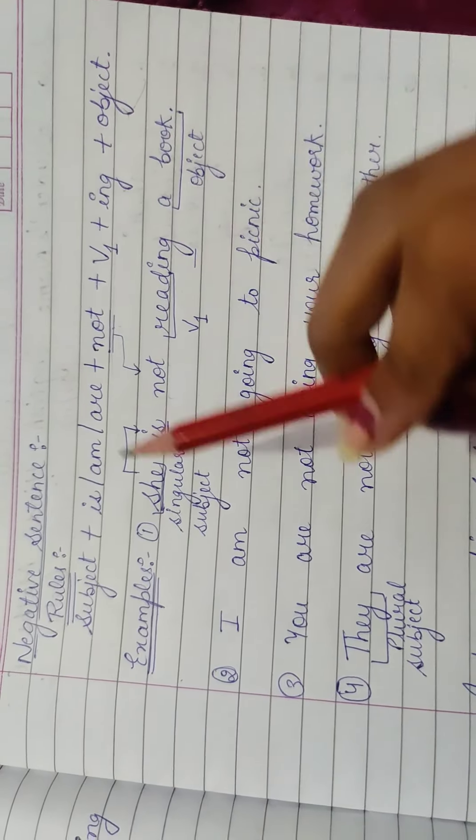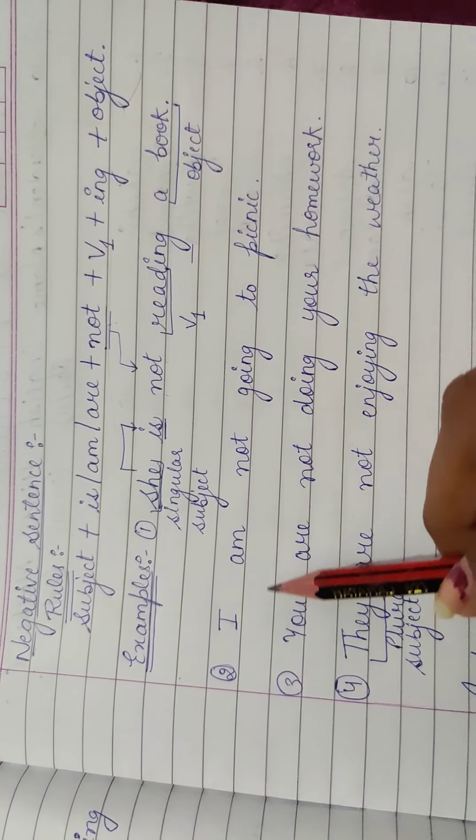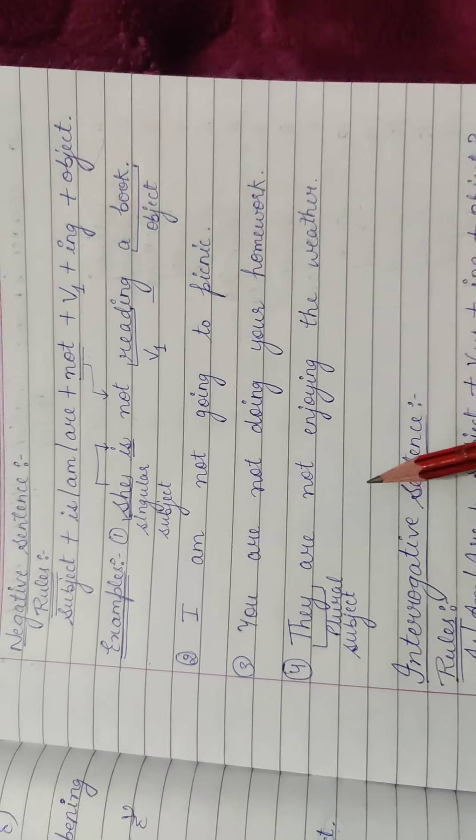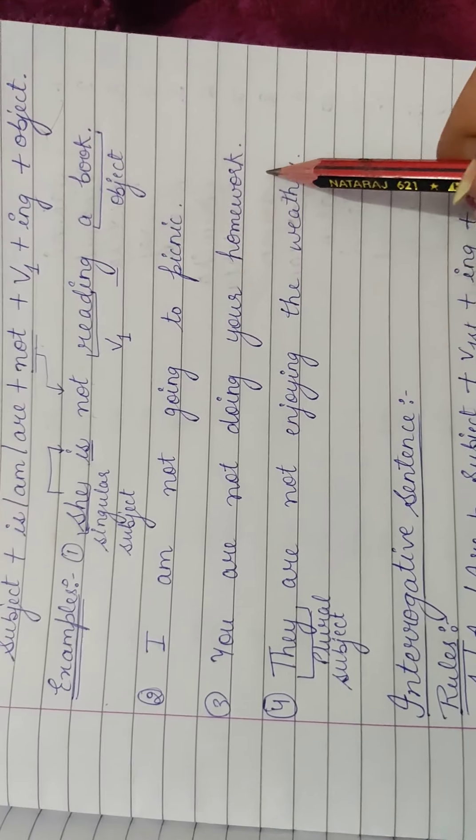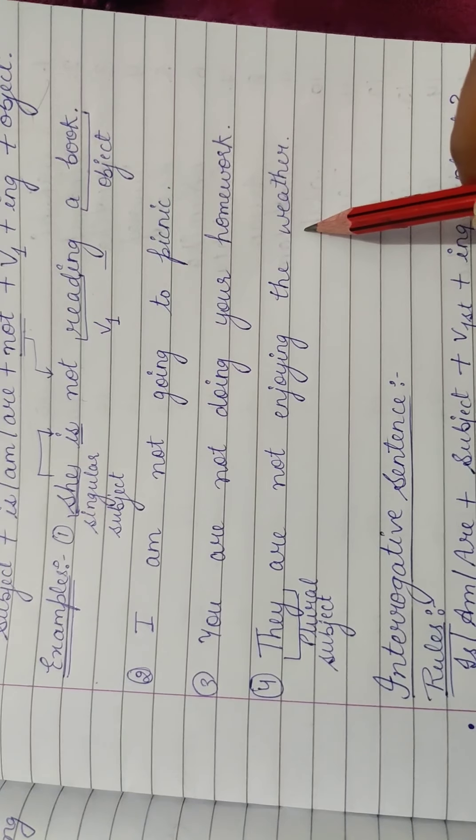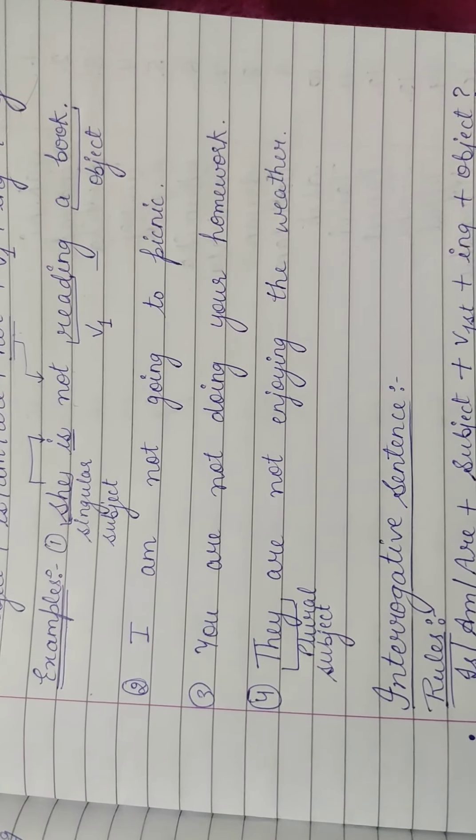To she is not reading a book. Pahle kya tha? She is reading a book. Ab she is not reading a book. Pahle kya tha? I am going to picnic. Abhi I am not going to picnic. Pahle kya tha? You are doing your homework - tum apna kaam kar raha ho. Abhi kya hai? You are not doing your homework - tum apna kaam nahi kar raha ho. Pahle tha, they are enjoying the weather, ki tum weather ko enjoy kar raha ho. Ab hai ki tum weather ko enjoy nahi kar raha hai.